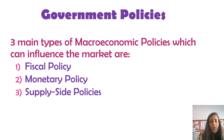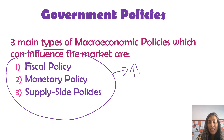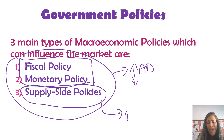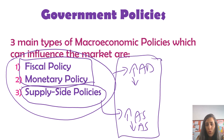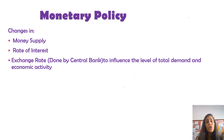As a quick reminder, these are the three main macroeconomic objectives. When the government wants to increase or decrease aggregate demand in an economy, they will be using fiscal and monetary policies. When the government wants to increase or decrease aggregate supply, they will be using supply-side policies, in order to achieve their macroeconomic objectives.